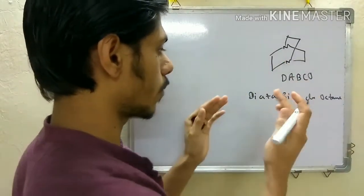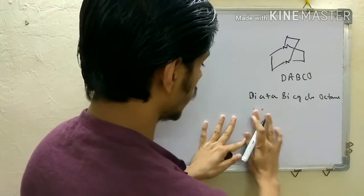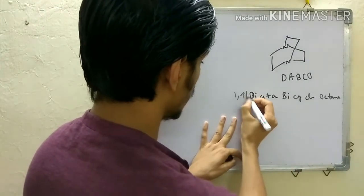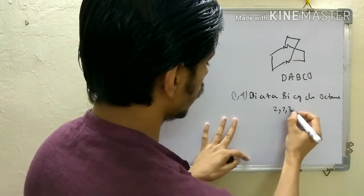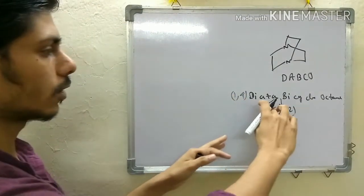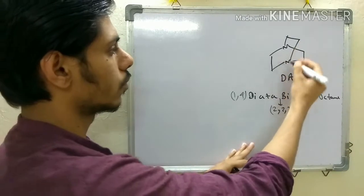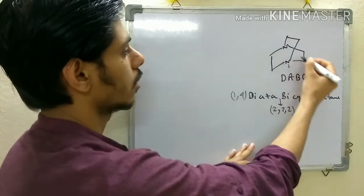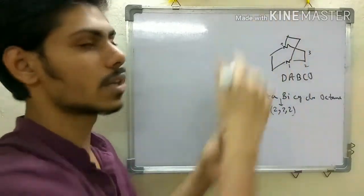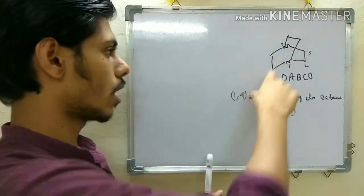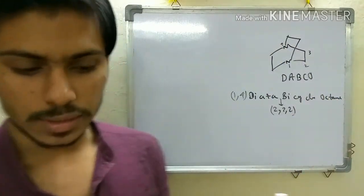DABCO stands for 1,4-diazabicyclo[2.2.2]octane. You can number it as 1, 2, 3, 4 — this is 1,4, and it is called octane because there are 8 carbons. So: 1,4-diazabicyclo[2.2.2]octane.